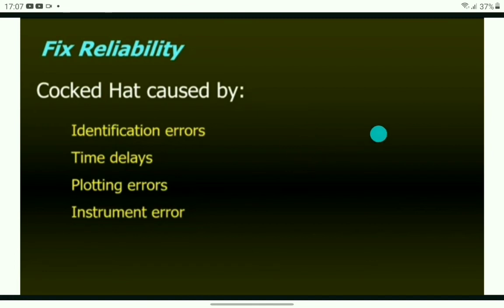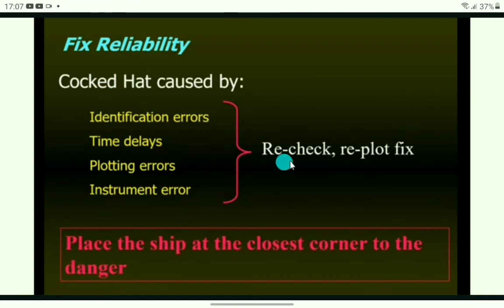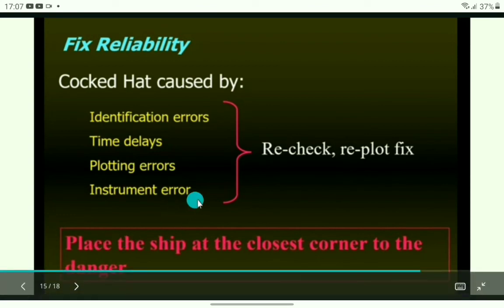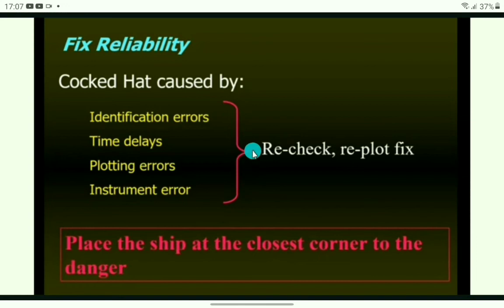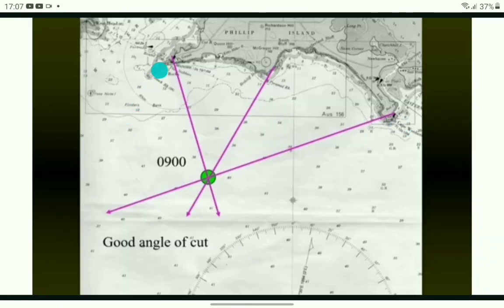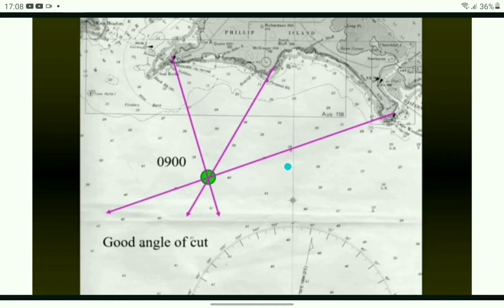In such cases, recheck and re-fix. If you keep getting a cocked hat, review your observations. When three position lines from objects that are widely separated are plotted, you can see they intersect at a very good angle and at the same point — this is called a good angle of cut and gives you a reliable fix. In coastal navigation, a cocked hat is resolved not by finding the center of the triangle, but by placing the vessel closest to the nearest navigational danger.